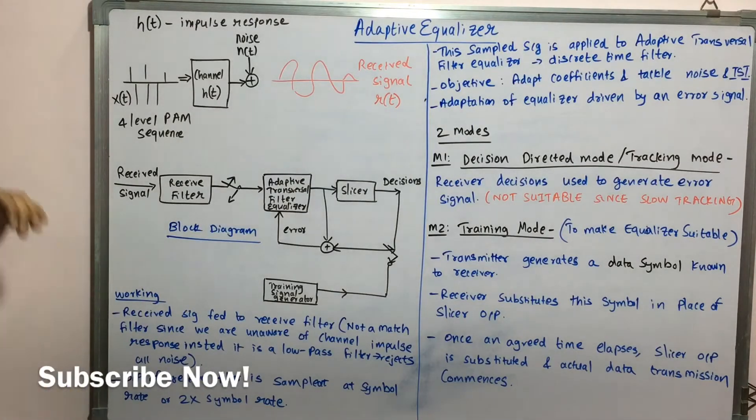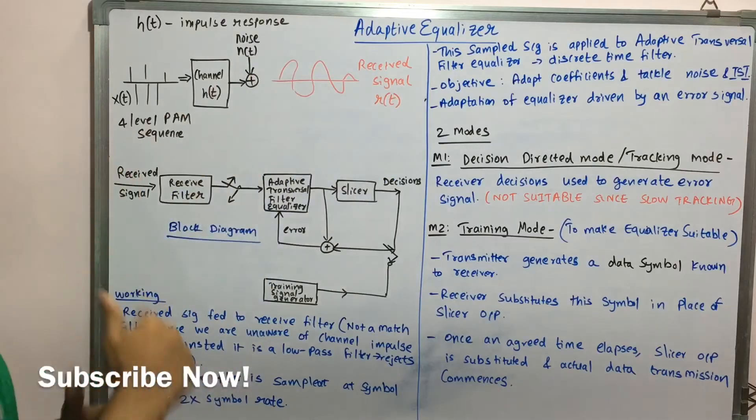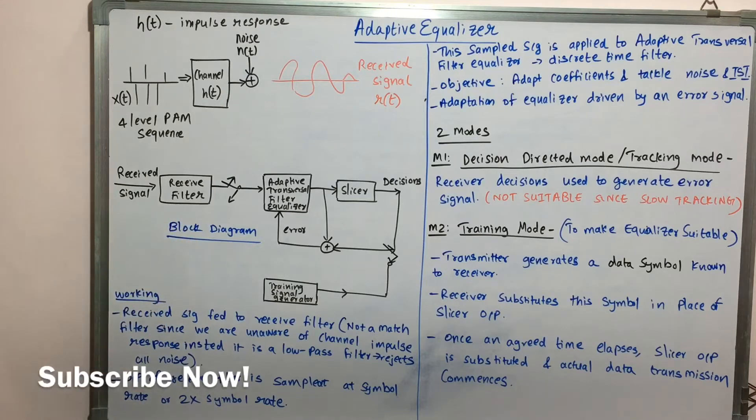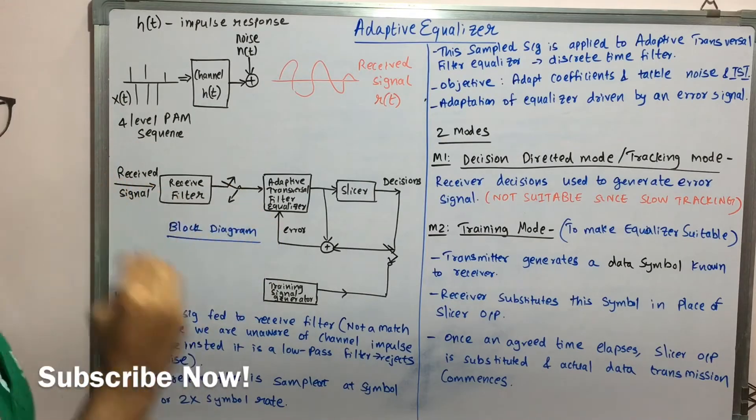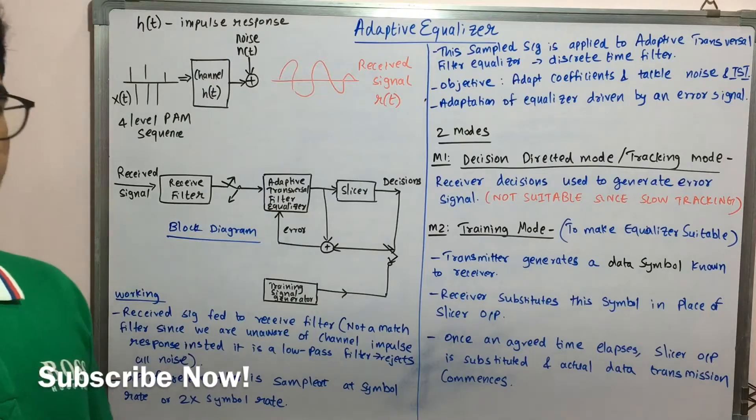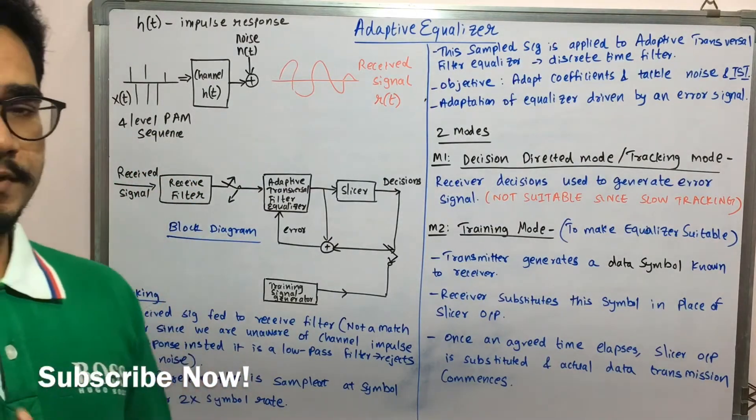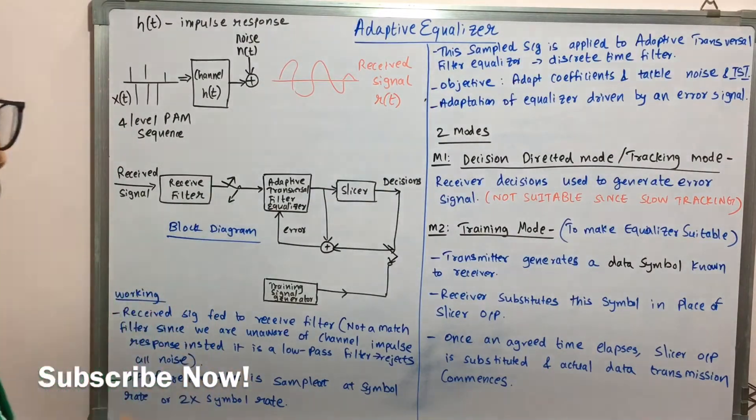So to begin with, we have this received signal. So received signal could be this RT or some other random signal. We have this very first block that is a received filter. So this received signal is fed to this receive filter. And so this receive filter is not a matching filter that you need to understand, means it does not match with the originally preoccupied signals.